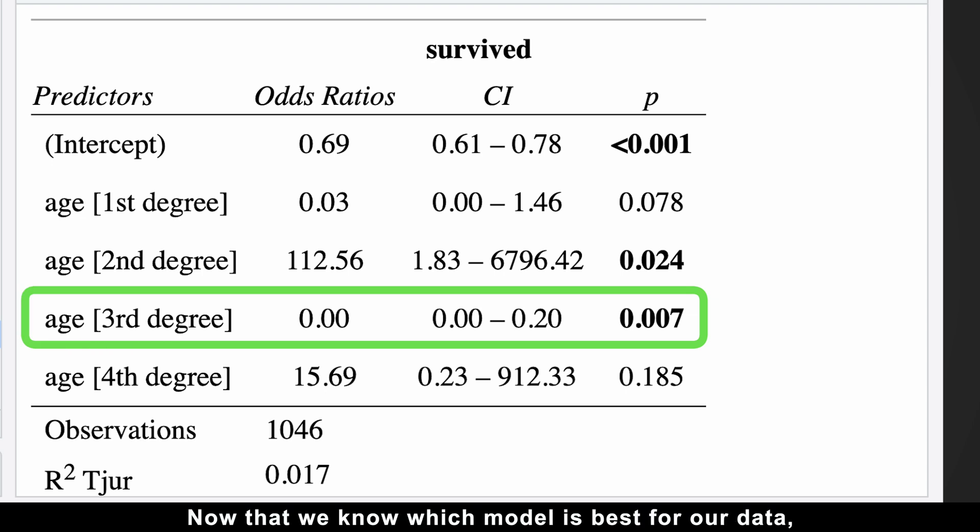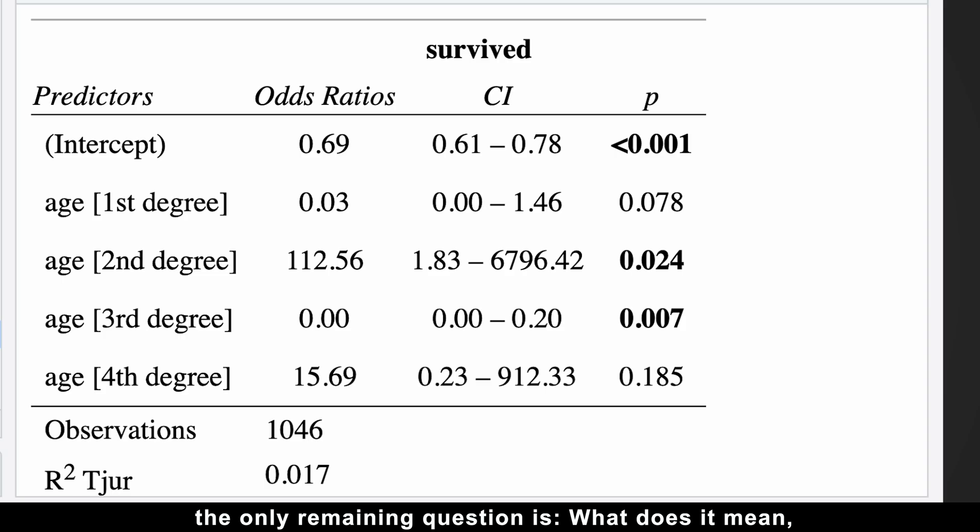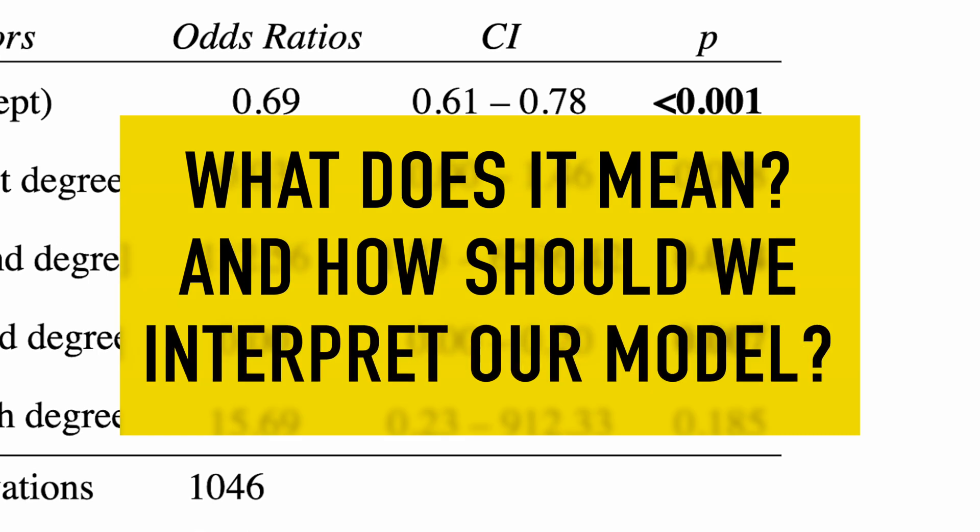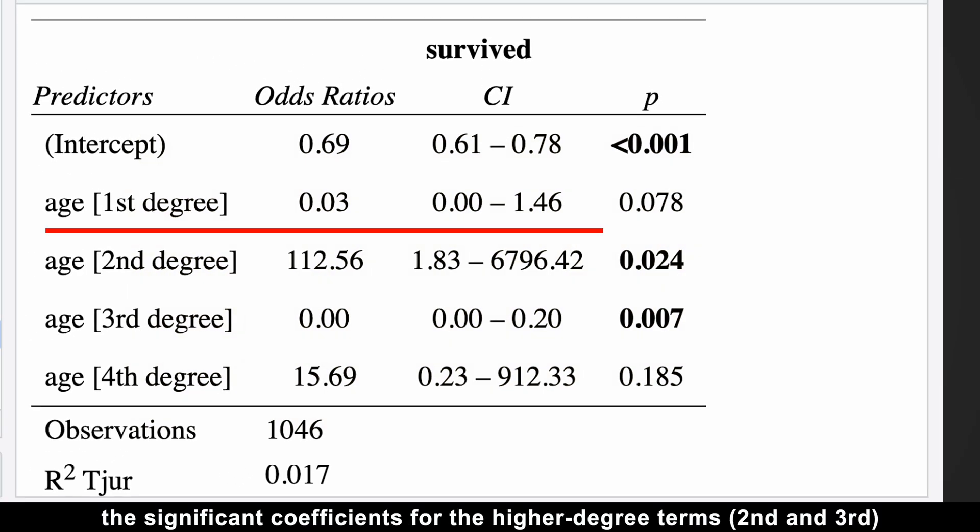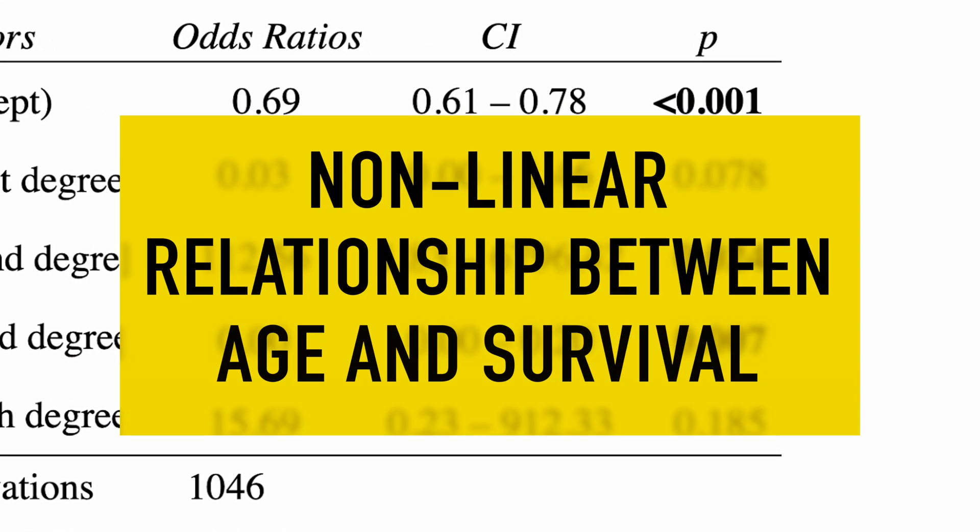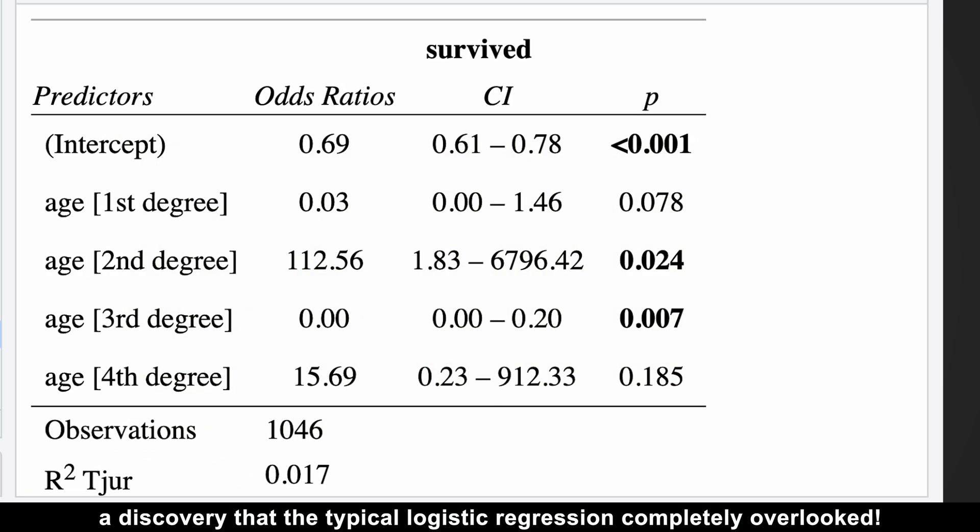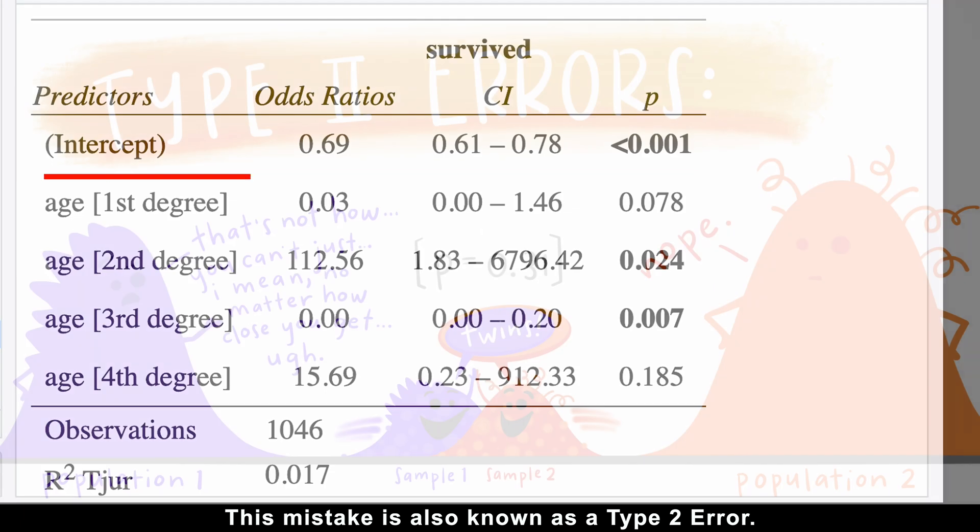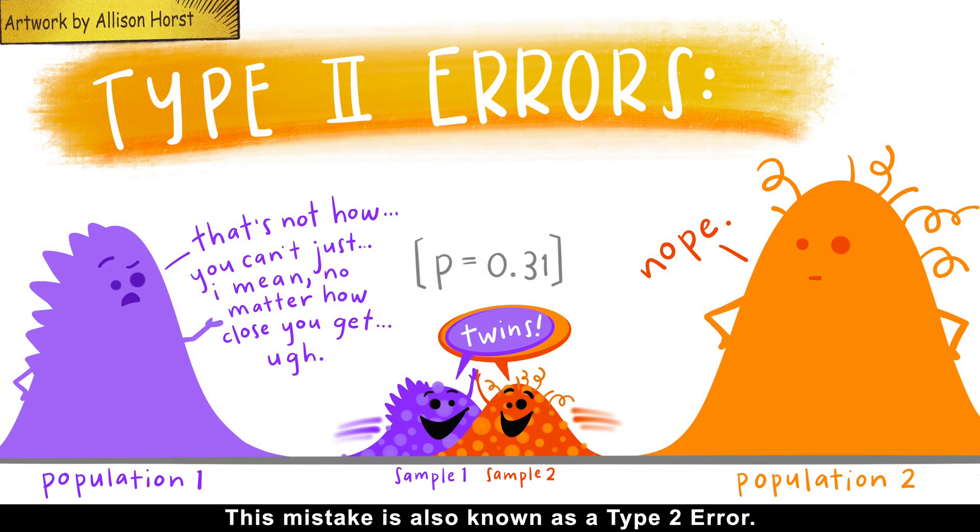Now that we know which model is best for our data, the only remaining question is what does it mean and how should we interpret our model? Well, the significant coefficients for the higher degree terms, second and third, reveal a nonlinear relationship between age and survival. A discovery that the typical logistic regression completely overlooked. This mistake is also known as type 2 error.